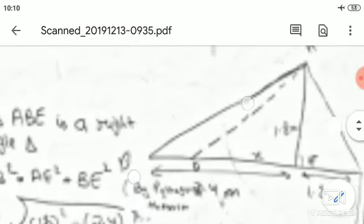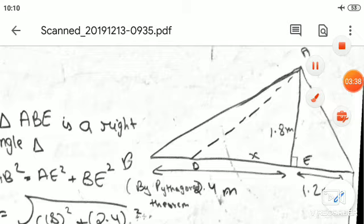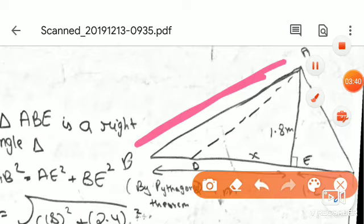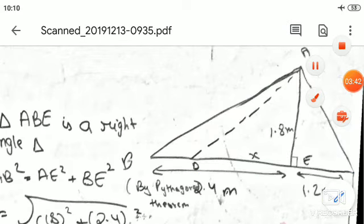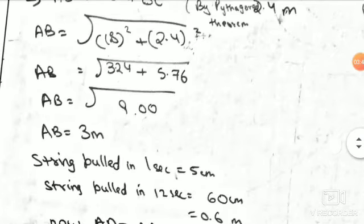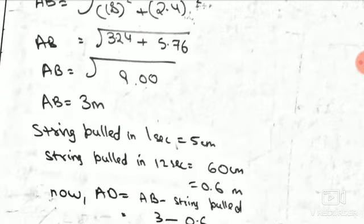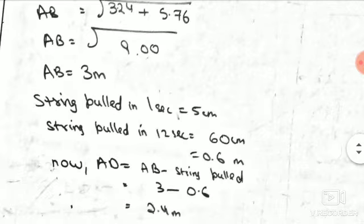This is 3 meters. String pulled in 1 second is 5 centimeters. String pulled in 12 seconds will be 60 centimeters, 5 into 12, 60 centimeters. Converting to meters, 0.6 meters.